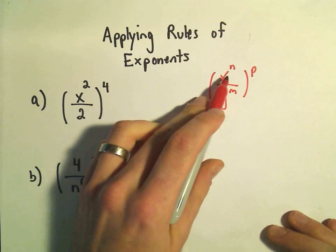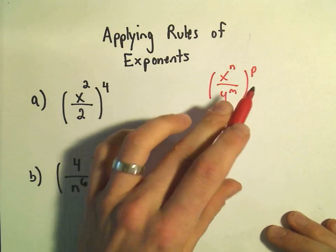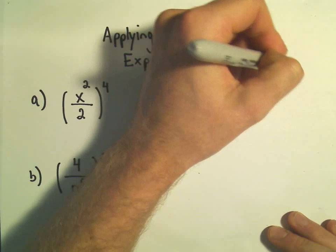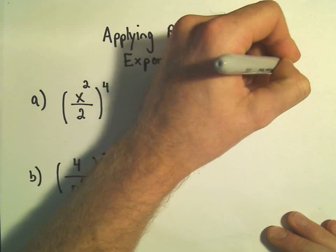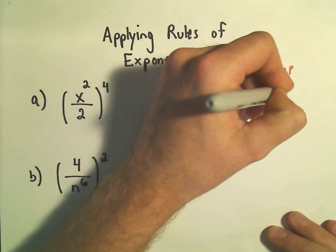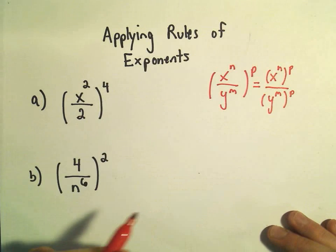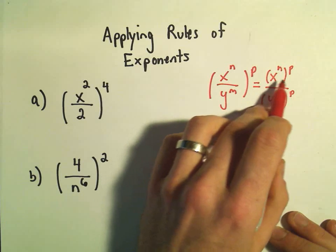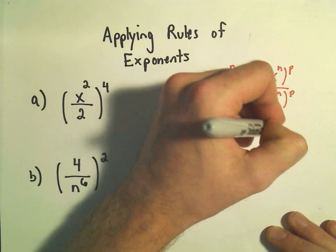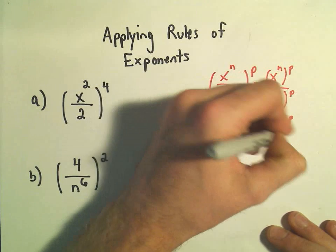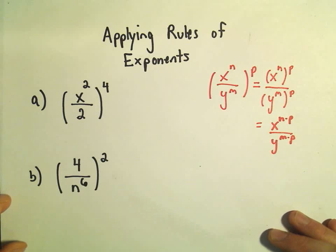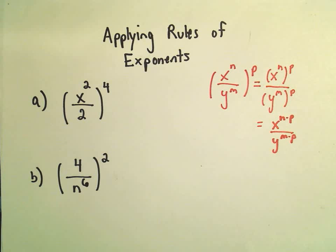Suppose I have x to the n over y to the m, all being raised to the p power. What it says is we can basically distribute the exponent to the top part, distribute the exponent to the bottom part, and then we have the rule from a previous video where you just multiply the two exponents together. So n times p, and on the bottom we'll have y raised to the m times p. So that's what we'll do in this case.